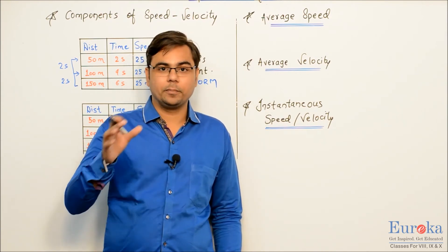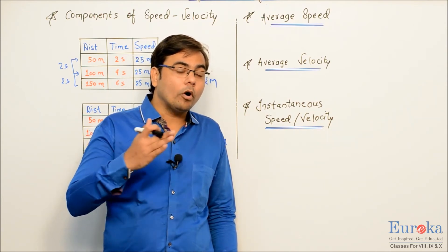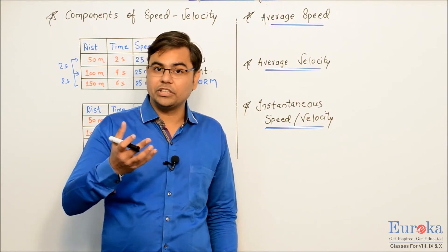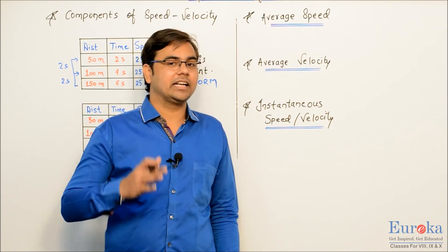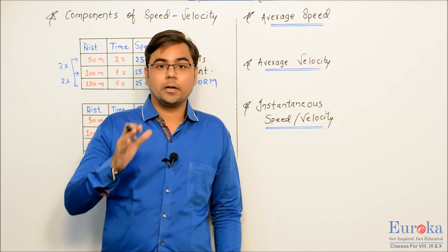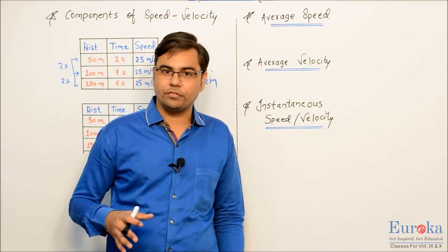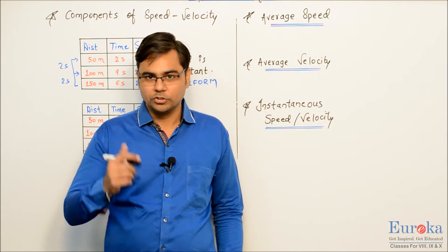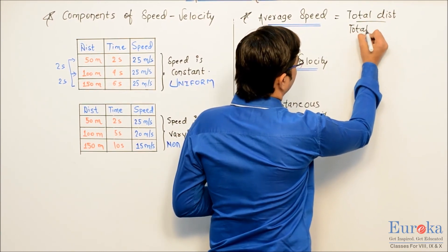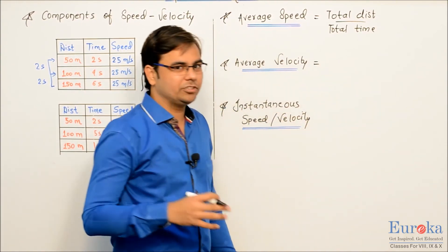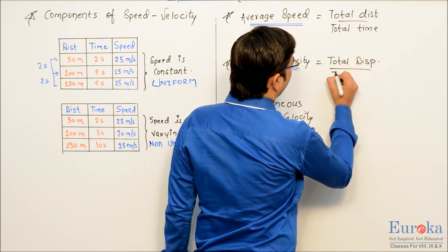To find average speed or average velocity, tracking all possible speeds throughout the journey is next to impossible. So instead, average speed is defined as total distance travelled divided by total time of the journey. Average velocity is similarly defined as total displacement divided by total time.